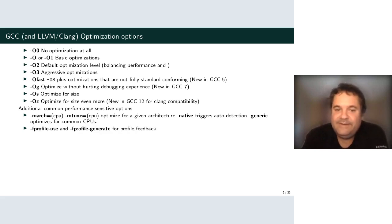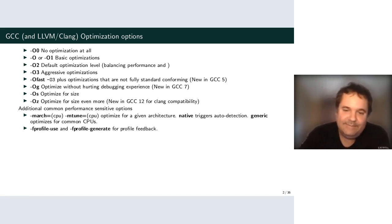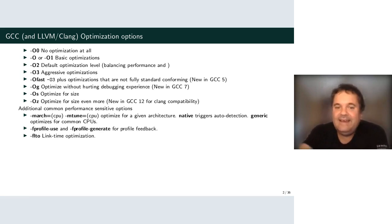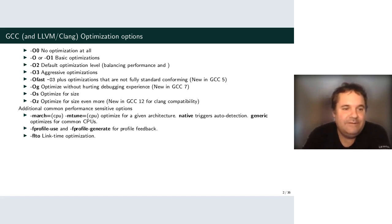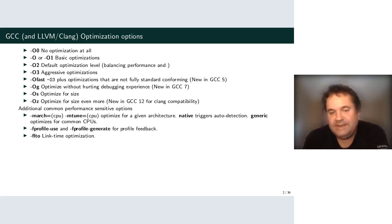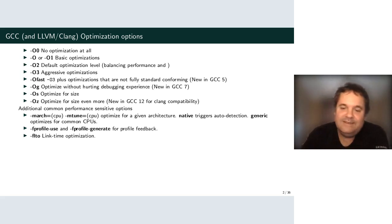We have profile feedback, a useful feature to get extra performance from the compiler. We have LTO — link time optimization — which is relatively new. It's now used by default on Tumbleweed for about two years, mostly through work of Martin Liska, making Tumbleweed basically the first big Linux distro using LTO by default.